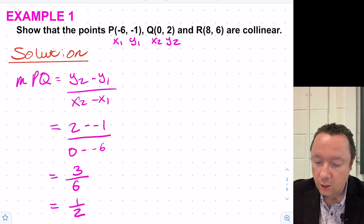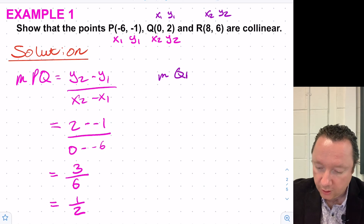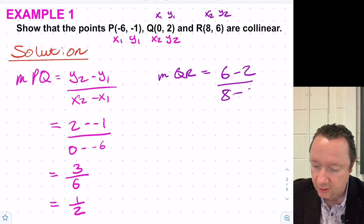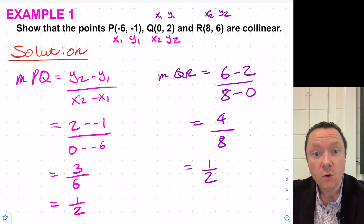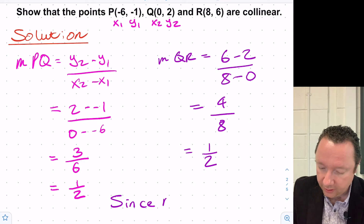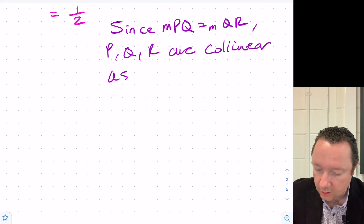Now let's do the same for Q to R. Calling Q as X1, Y1 and R as X2, Y2, the gradient of Q to R equals Y2 minus Y1: 6 minus 2 over 8 minus 0. That's 4 over 8, which simplifies to a half. Since the gradient of PQ equals the gradient of QR, and Q is a common point, P, Q and R are collinear.